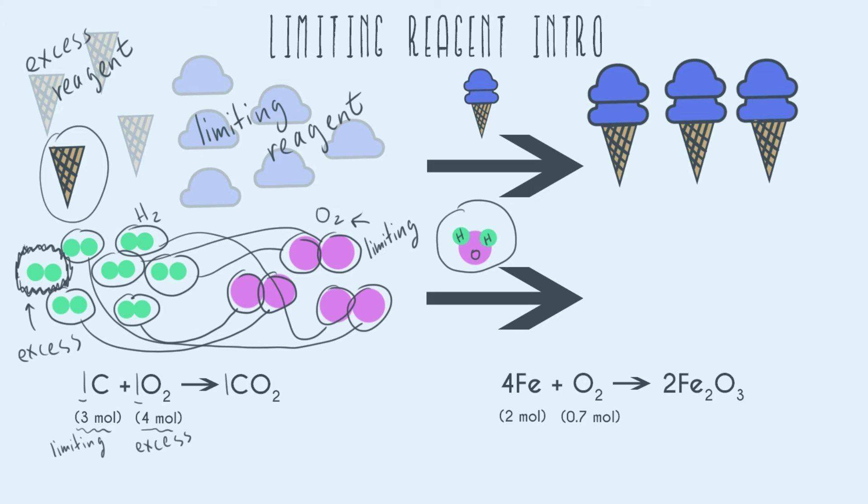All right, so now let's do another example where we don't have a one to one ratio. In our iron plus oxygen, we have four irons plus one oxygen is balanced to create two Fe2O3s. And so we're also given that we have two moles of iron and that we have 0.7 moles of O2. So now there's a couple different ways that you can figure out which is your limiting reagent.